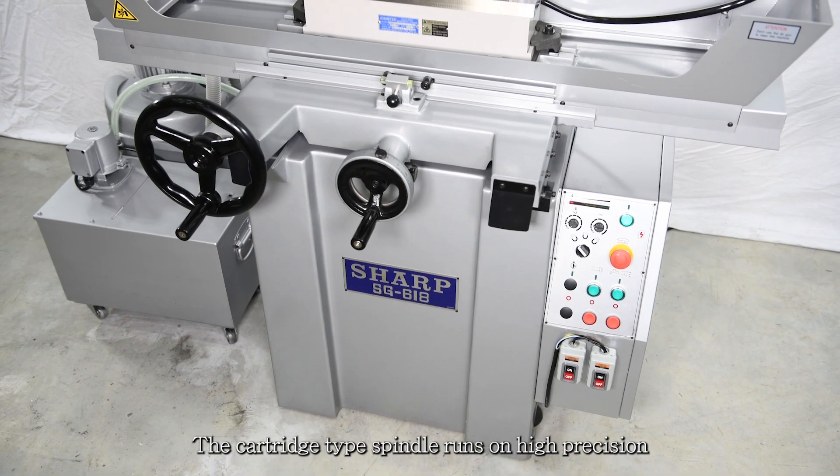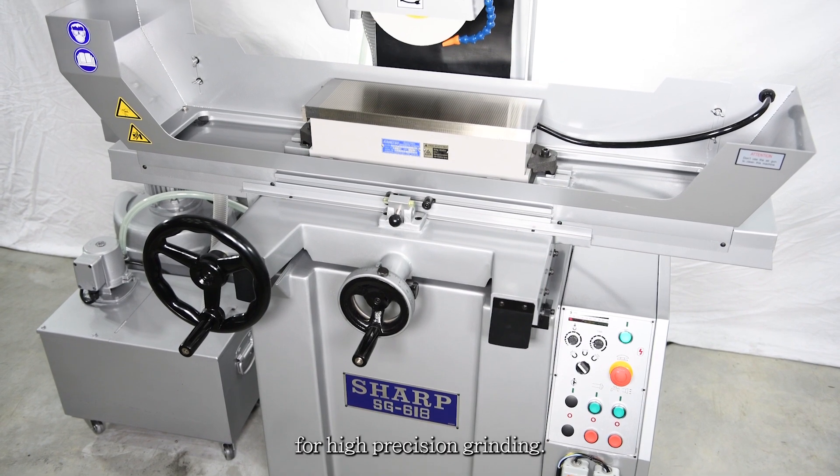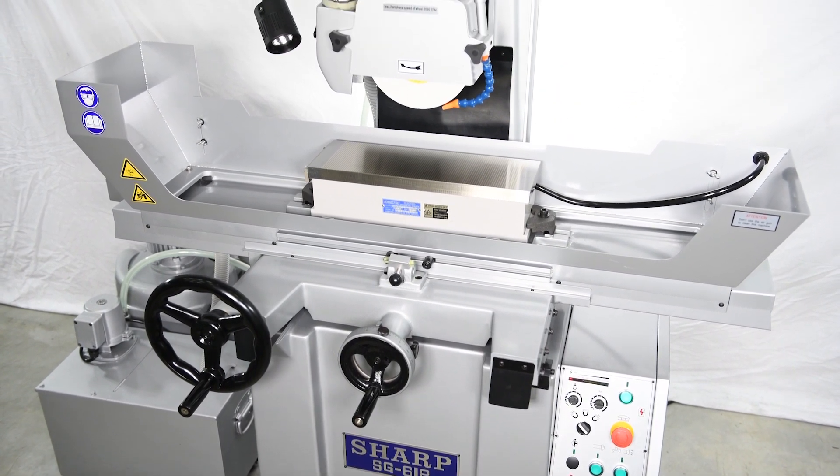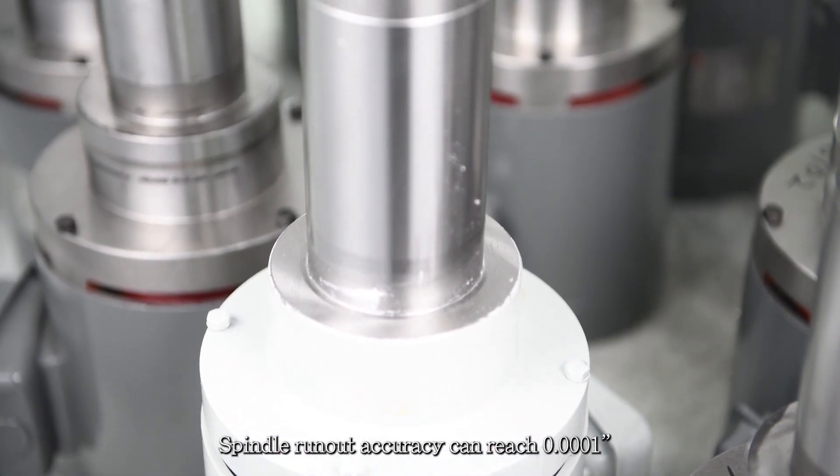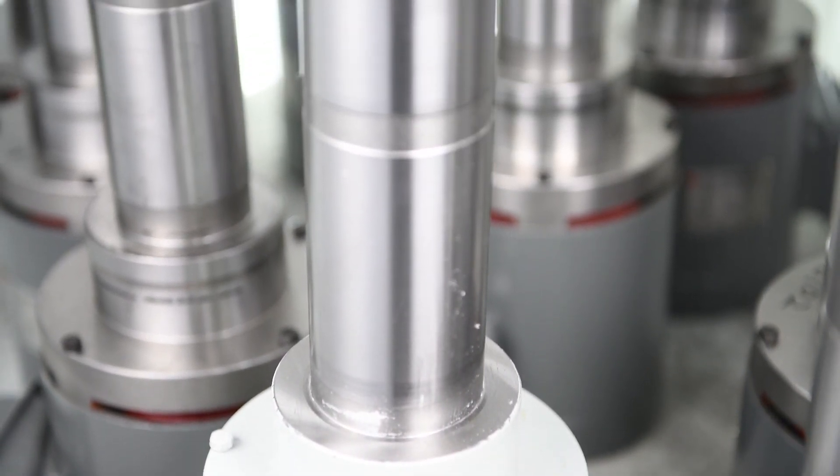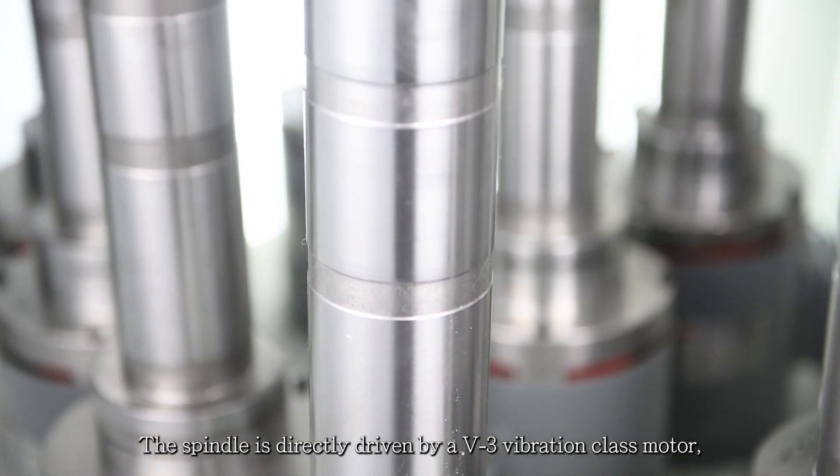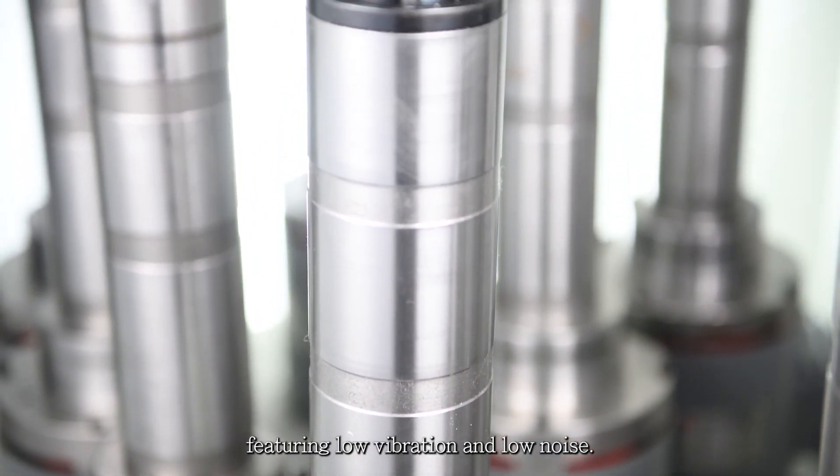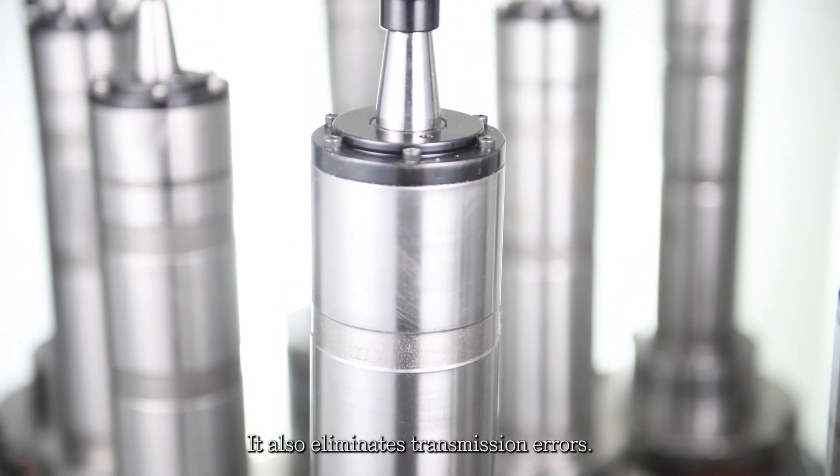The cartridge type spindle runs on high-precision angular contact bearings for high-precision grinding. The spindle run-out accuracy can reach 0.0001 inches. The spindle is directly driven by a V3 vibration class motor featuring low vibration and low noise. It also eliminates transmission errors.